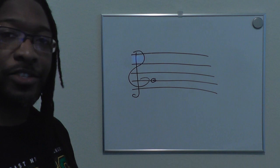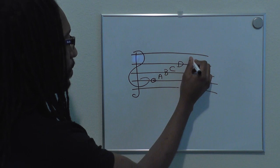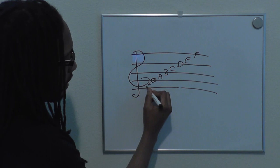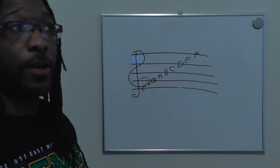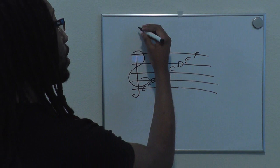Because of this symbol, we know that line is G, and above it would be A, B, C, D, E, and F, and below would be F. That gives us the letters E, F, G, A, B, C, D, E, F. You'll notice we have E, F, G and then it turns back around and goes to A — but that's not what comes after G in the alphabet, right?